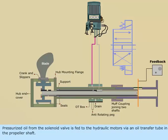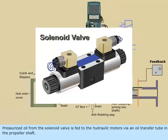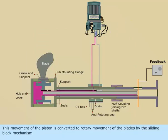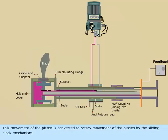Pressurized oil from the solenoid valve is fed to the hydraulic motors via an oil transfer tube in the propeller shaft. This movement of the piston is converted to rotary movement of the blades by the sliding block mechanism.